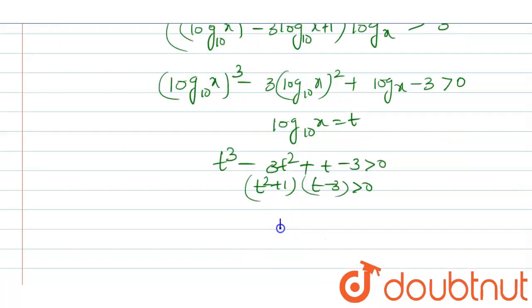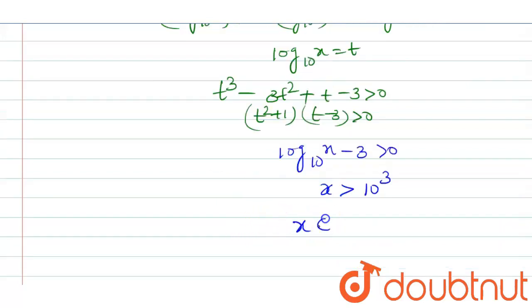So that the next step: we can see that log₁₀x - 3 > 0. Okay, so log₁₀x > 3, which means x > 10³. So the value of x lies between (1000, ∞). Let's see the options here.